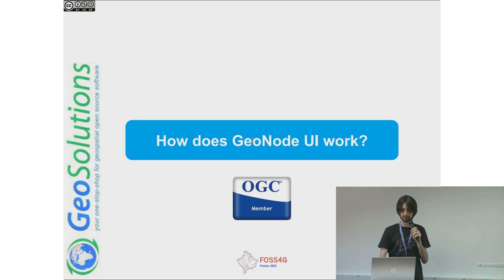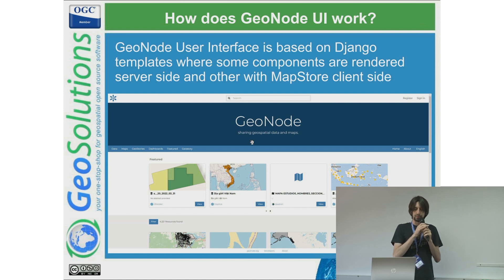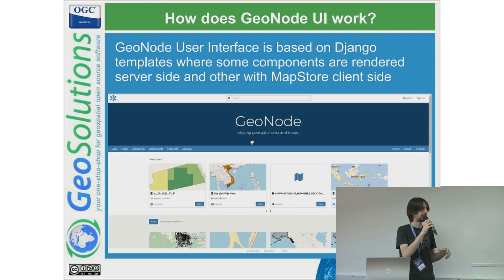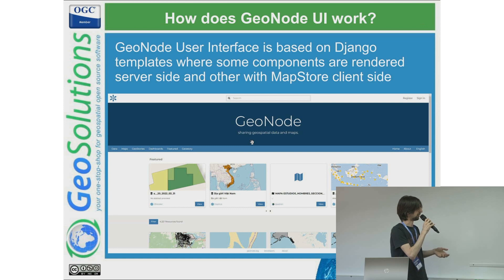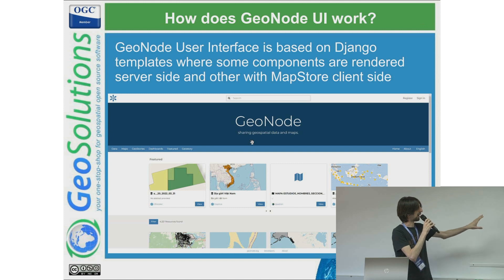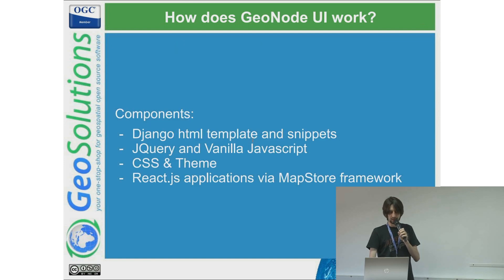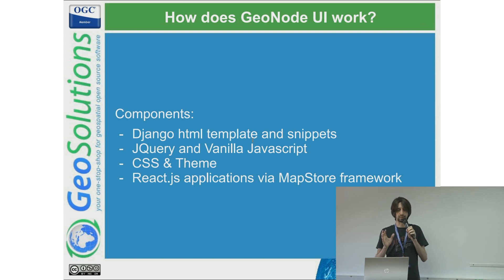Through this presentation we will try to highlight the pieces that compose the user interface. We can see from the screenshot that it's the home page of GeoNode. The home page is composed by different pieces: some of them are rendered server-side through the Django template engine, and some through the React components provided by MapStore. The resource cards are coming from the MapStore integration, while the header and other components are static HTML rendered from the Django template engine.